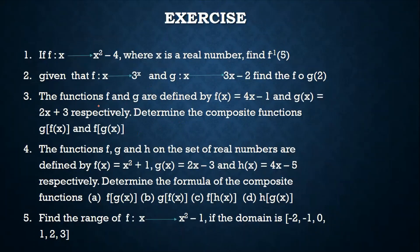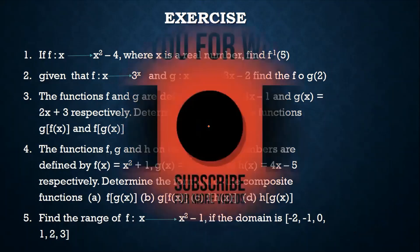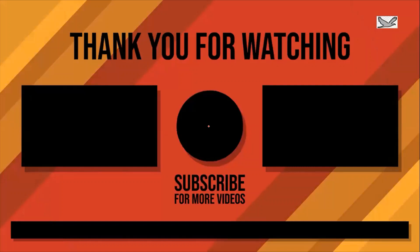This brings us to the end of the series on mapping and functions, where we covered: domain, co-domain, range, image, and meaning of functions; types of mapping — onto, one-to-one, surjective, bijective, and injective; composite mapping; and inverse functions. Thank you for watching. Please subscribe, like, and comment.